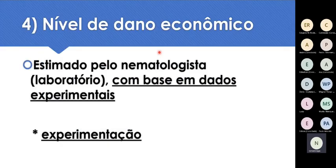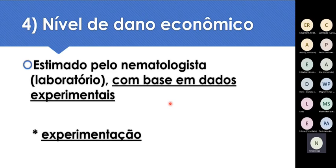Ao mandar a amostra analisar, um bom laboratório com nematologista vai dizer quais as espécies de nematóides e quanto há de cada espécie. Aí você precisa saber se esse número é importante — ou seja, se a população está acima ou abaixo do nível de dano econômico. Por isso é preciso ter no laboratório um nematologista que entenda de cana. Hoje, infelizmente, temos pouquíssimos. Eu trabalho com isso há muito tempo e tenho muita experiência com cana, fazendo essa interpretação dos dados para fornecedores e usinas.